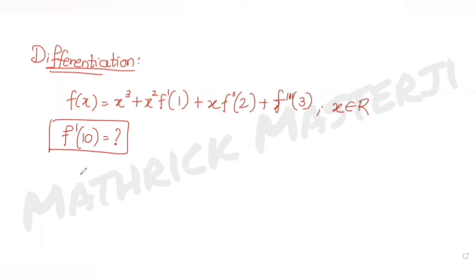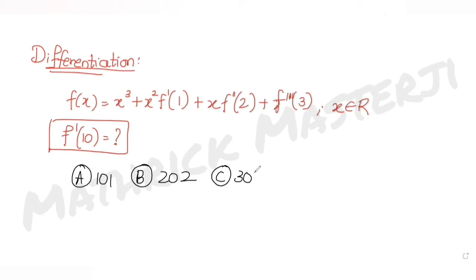The answer choices we have been given are 101, 202, 303, and 404. We need to figure out which one of these is the correct answer for the question given to us. Let's try to find the solution.